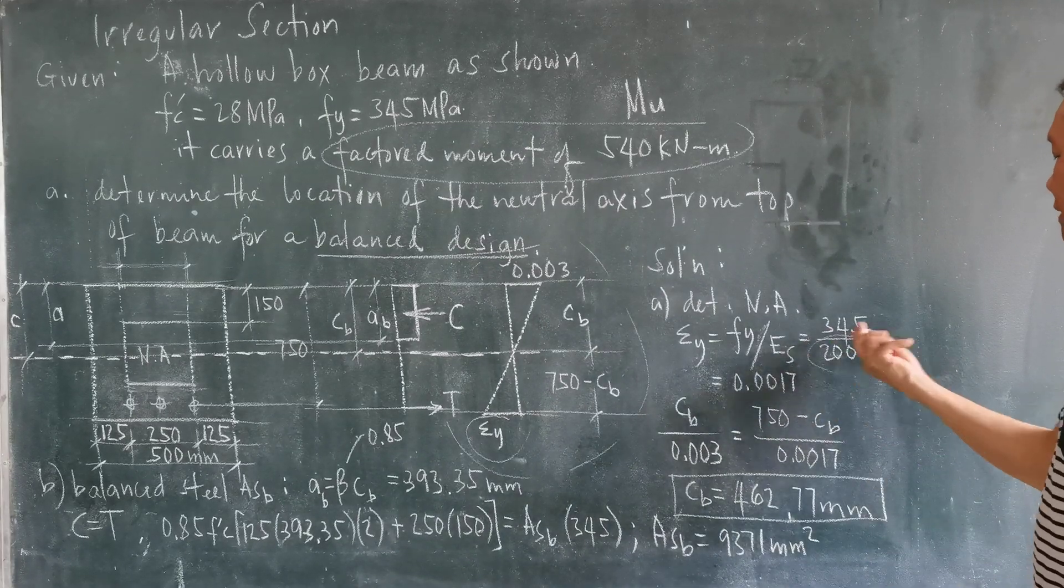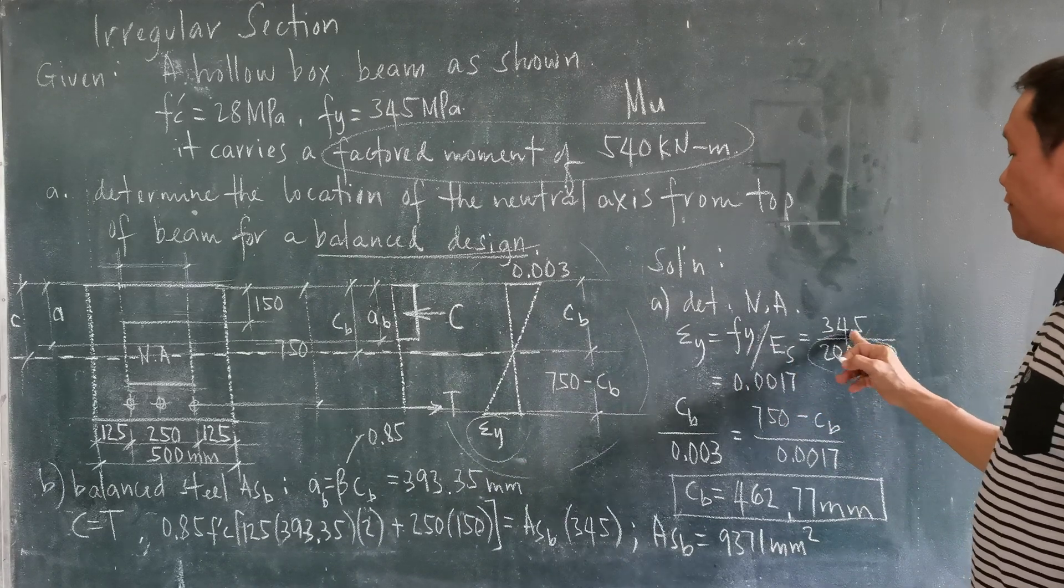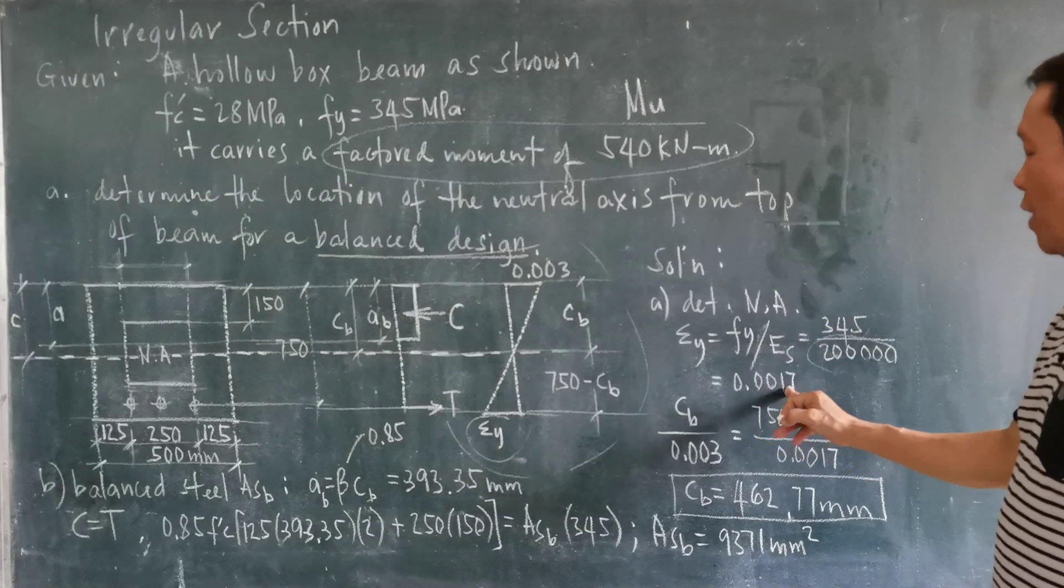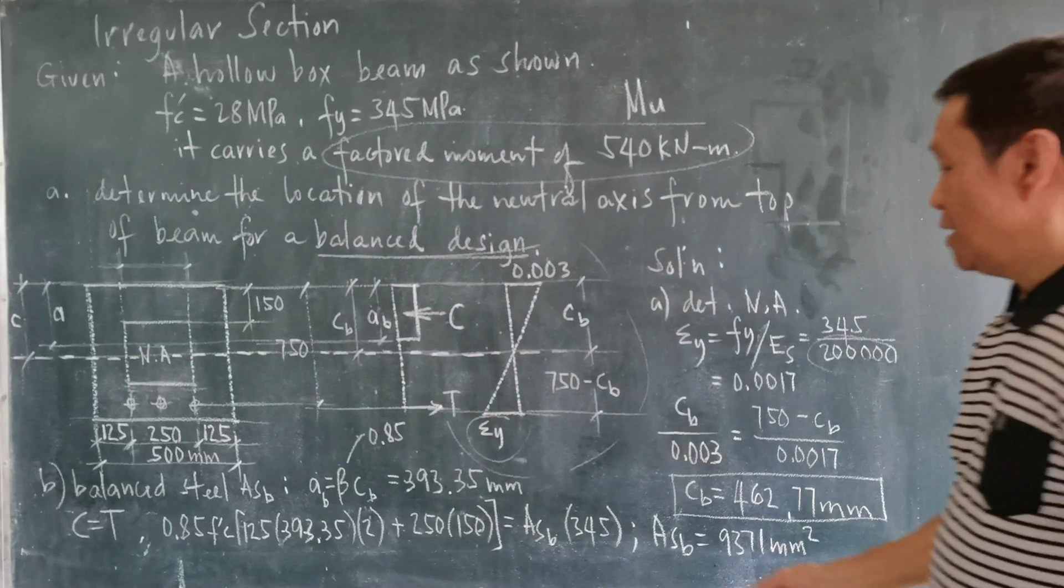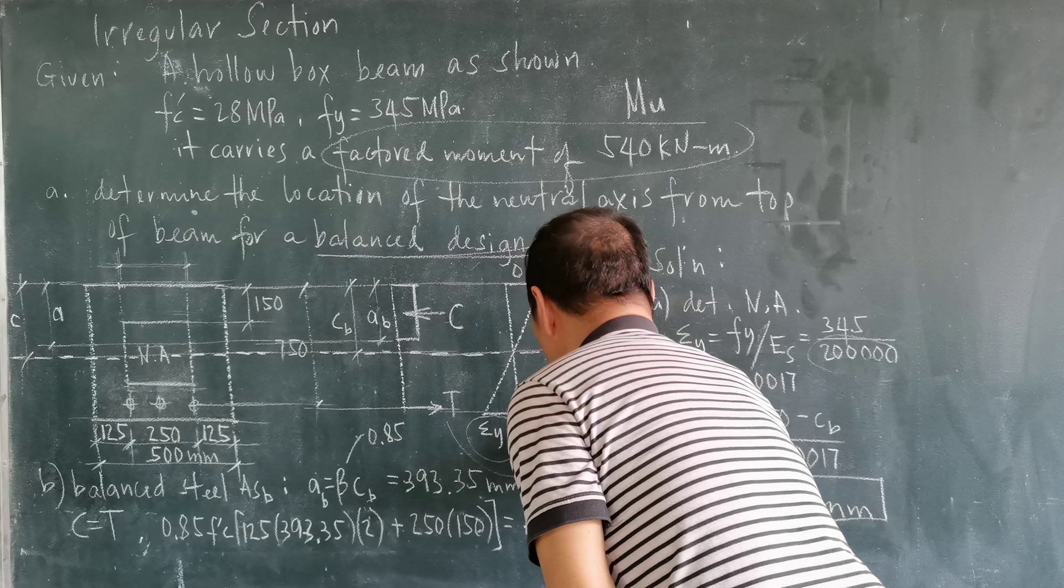Which is always 200,000 MPa. And your FY is 345. So solving this, you will get 0.0017.